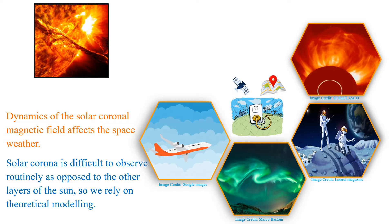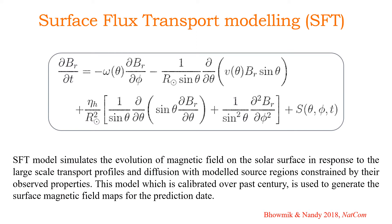The structure and brightness of the corona is determined by the photospheric magnetic field distribution on the surface. To model the photospheric magnetic field dynamics we use an SFT model, which essentially solves the radial component of the magnetic induction equation in response to large-scale transport profiles like meridional circulation, differential rotation, and diffusivity, with source regions modeled based on observed active region parameters like latitude, longitude of emergence, area flux, and tilt angle. This model is calibrated over the past century to generate future surface magnetic field maps.